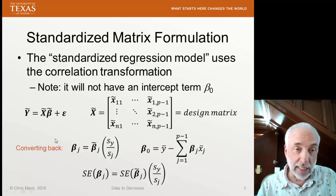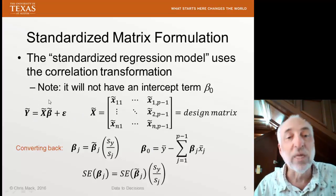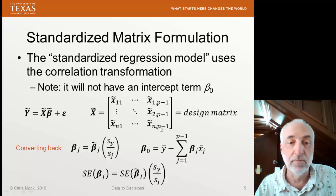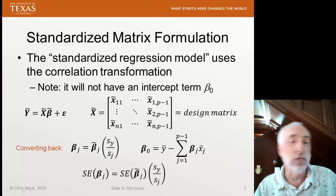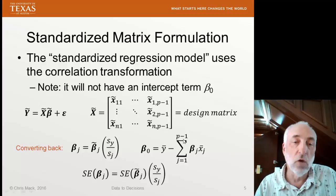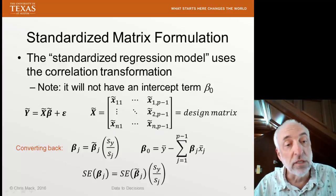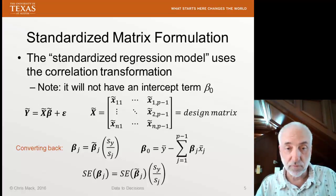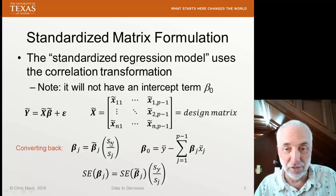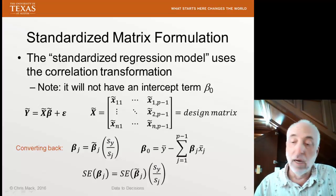If we do our regression modeling with these standardized variables, we can then convert back to the original models very simply using these equations. These equations work whether I'm using the unit normal scaling or the unit length scaling, because if I divide it by the square root of n minus 1 on both of these terms, it would turn out the same.